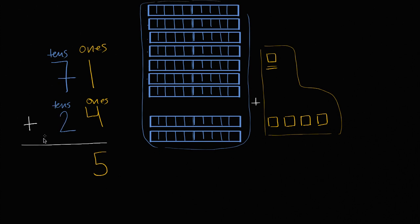Seven tens plus two tens is nine tens. So we're left with nine tens, which we see right over here, and five ones.